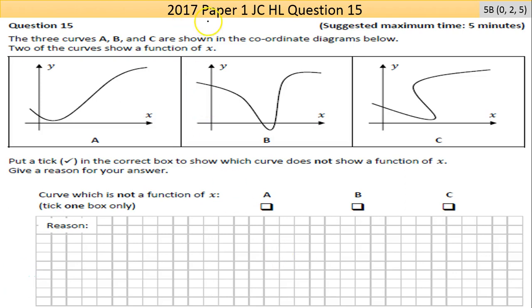Okay, hi and welcome to the 2017 Paper 1 Junior Certificate Higher Level Question 15. Glad to say it's the last question of this exam paper. Question 15 is worth five B marks, it's on its own just a smaller tag on the end. It's a tricky one about the three curves A, B, and C.